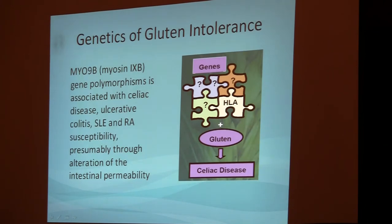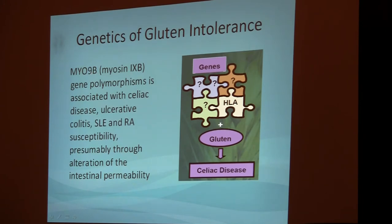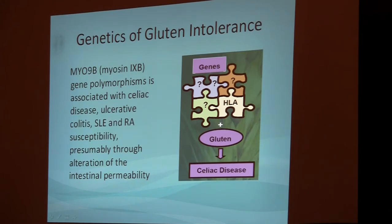More recently, around three or four years ago, it was also shown that patients with severe forms of gluten intolerance have additional genes that participate in the development of pathological processes. One of them was identified as the myosin-9B gene. This gene is shared by patients who have colitis, lupus, and rheumatoid arthritis, and it is responsible for increased permeability of the gut — the so-called leaky gut syndrome. Patients who carry the myosin-9B gene along with HLA-DQ2 or DQ8 have a much higher risk of severe gluten intolerance or celiac disease.